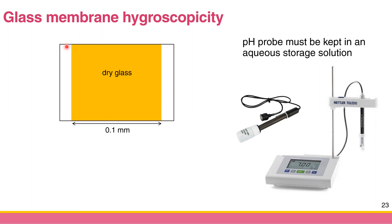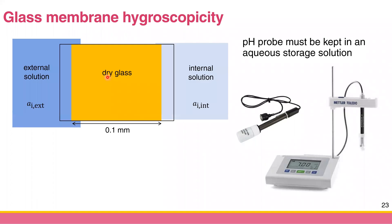The glass membrane used for pH measurement has a property called hygroscopicity. Basically, when you put the glass in an aqueous solution — there is an external solution and an internal solution inside the pH electrode — the glass membrane absorbs water from both sides.